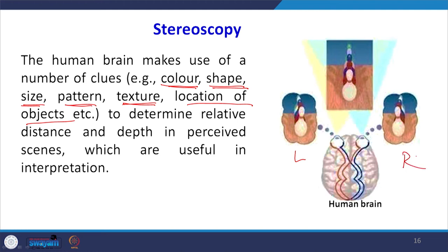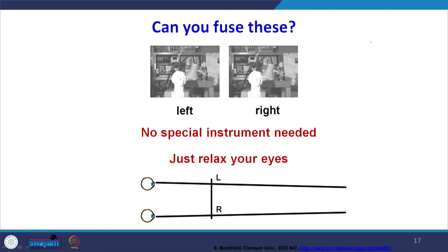This is the left image, this is the right image, and this is the 3D image which has been fused. The brain does its work very quickly and the decision comes very fast. If you have two images — for example, a left image and right image of a statue — can you fuse these with your eyes? Yes, you can. An experienced interpreter will not require any device. They will look at these two images without cross vision and fuse them to get the 3D model, seeing one single image instead of two separate images.